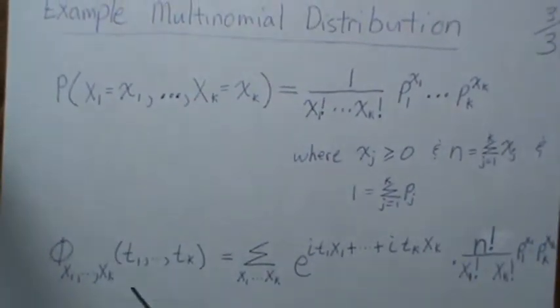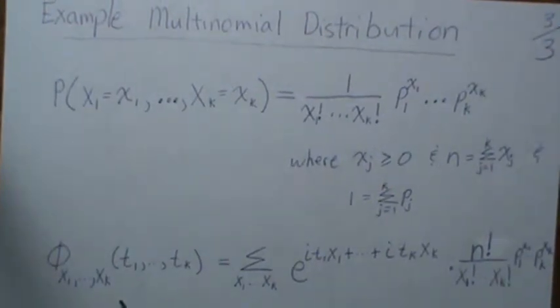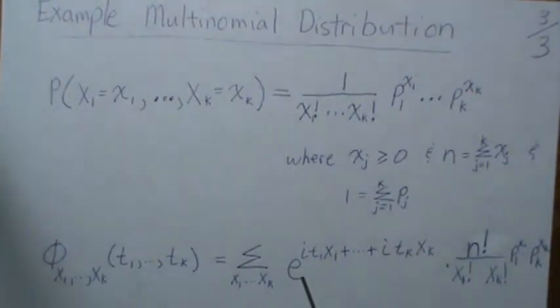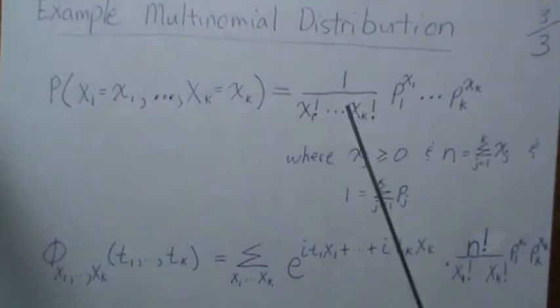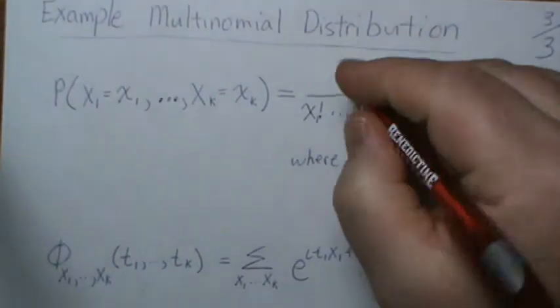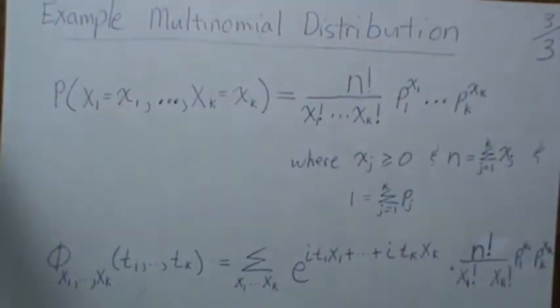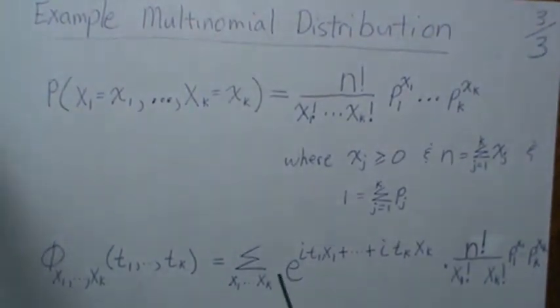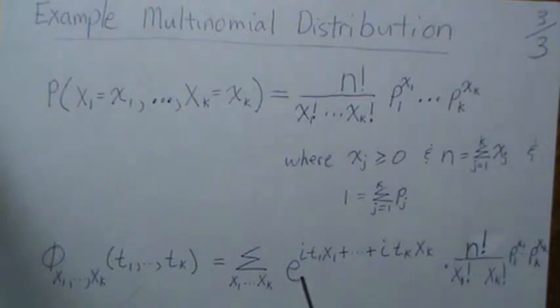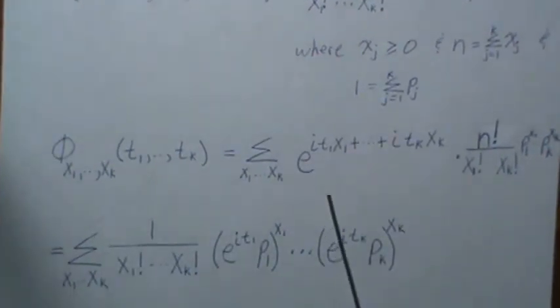So that means the joint characteristic function is defined like this. So you plug in E to the IT1 plus I to the TK, times this constant, that should be an N right there. And then N factorial. And then times what you get over here. Now, since this is the linear combination, you can take them in and make it a product, E to the IT1 X1 times E to the IT2 X2, etc. And then that is an X1, it's raised to the same power. So then you can take all those into the P, their respective, and we're left with this.